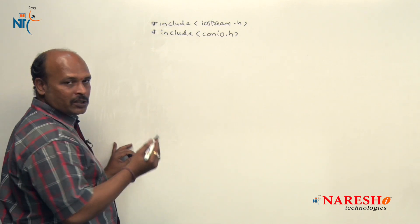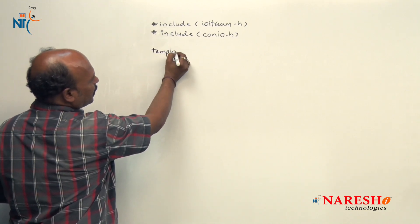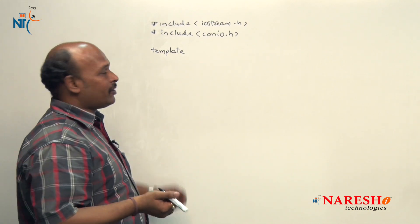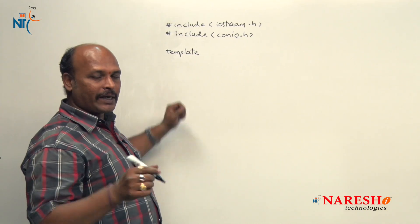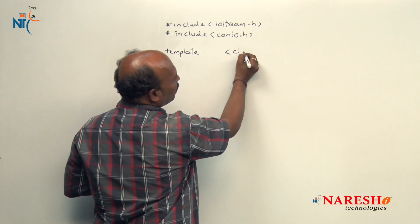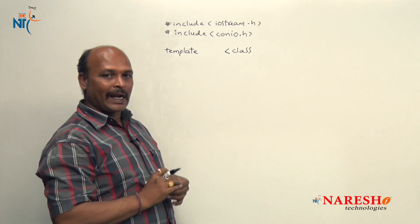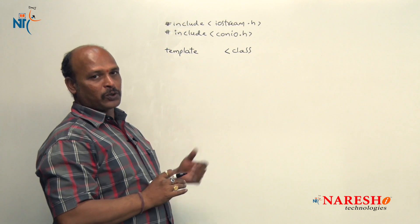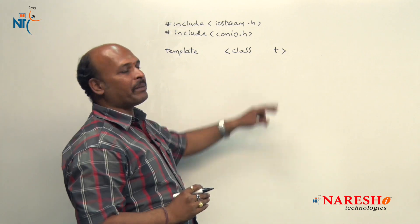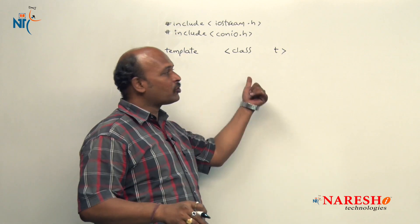First of all we start a template with the keyword `template`. The compiler understands we are going to define a template here. The template rule is: use angle brackets, and inside use the keyword `class` followed by a placeholder name. We are providing the name `T`. The type T depends on the parameters we pass from the main function to this function.